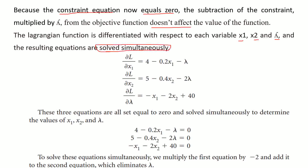We differentiate the Lagrangian function with respect to all variables using partial derivatives and equate each to 0. Differentiating with respect to x₁ gives 4 − 0.2x₁ − λ = 0. With respect to x₂ gives 5 − 0.4x₂ − 2λ = 0. With respect to λ gives −x₁ − 2x₂ + 40 = 0. These three equations are all set equal to 0 and solved simultaneously to determine x₁, x₂, and λ.